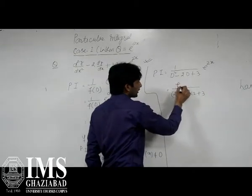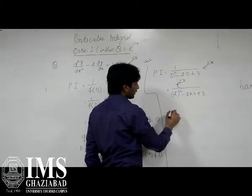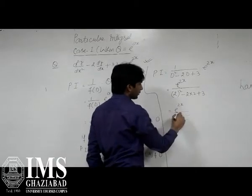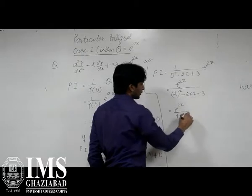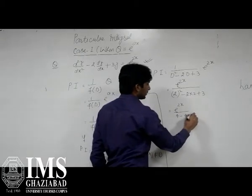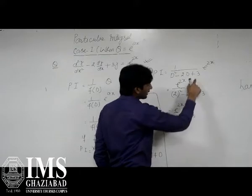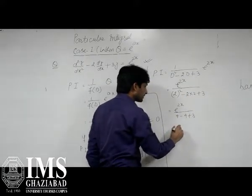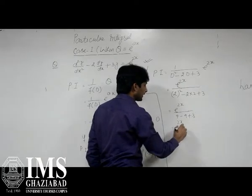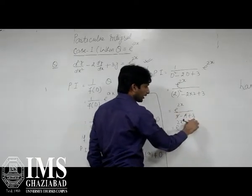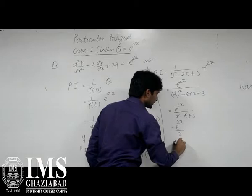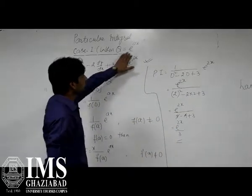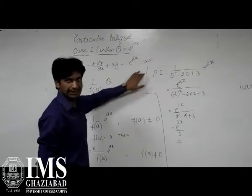So we can easily replace 1 upon, D is equal to 2, minus 2 into 2 plus 3. So this is the denominator. So it also implies e to the power 2x upon 2² minus 2×2 plus 3. Here, let us see this is the denominator. This is the particular integral of this particular question when Q is equal to e to the power 2x.